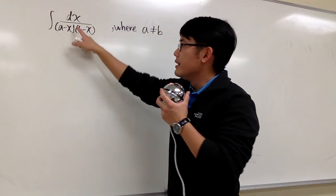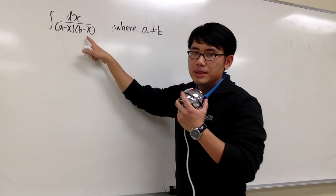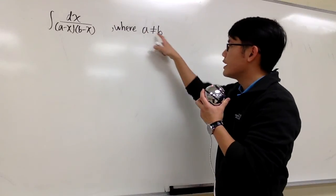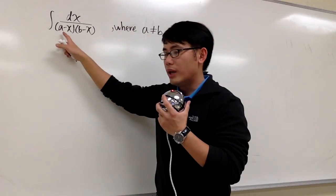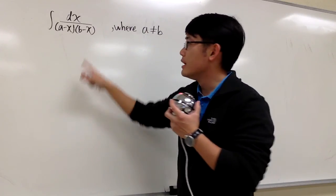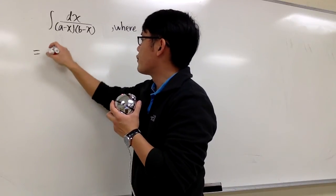Let's take a look at how we can integrate dx over (a-x) times (b-x), where a is not equal to b. As we can see, we have two linear factors on the denominators, so we have to use partial fraction.